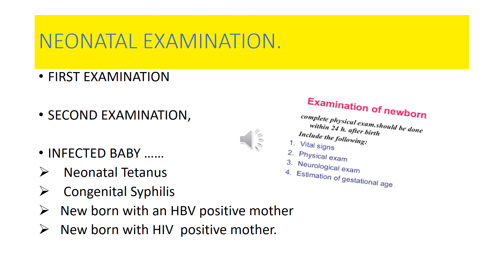Another important infection involves the newborn of an HIV-positive mother. Around 30% of babies born to HIV-positive mothers get infected. Transmission mostly occurs at the end of pregnancy and is not influenced by the type of delivery. These are the common neonatal infections; detailed prevention has been covered under the respective communicable disease topics.